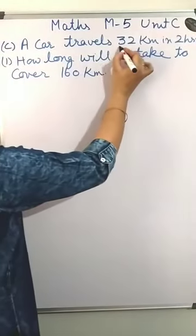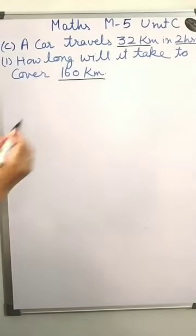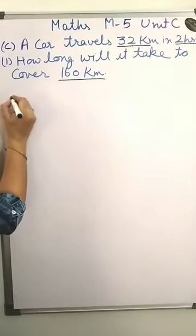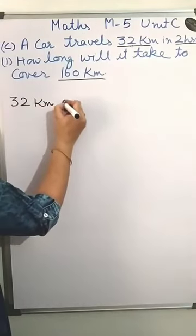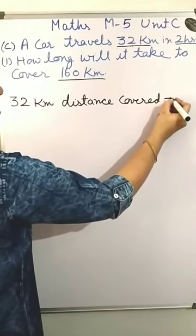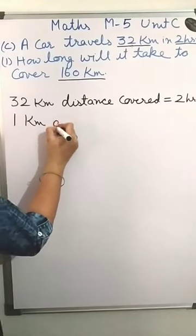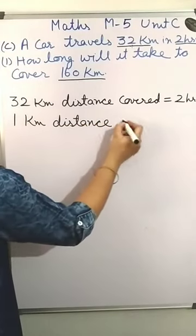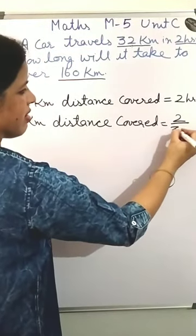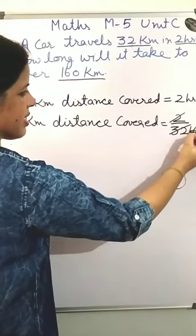In this question, a car travels 32 km in 2 hours. How long will it take to cover 160 km? First we calculate the time the car takes to travel 1 km. 32 km distance covered is equal to 2 hours. So 1 km distance covered — we divide by 32. It becomes 1 upon 16 hours.